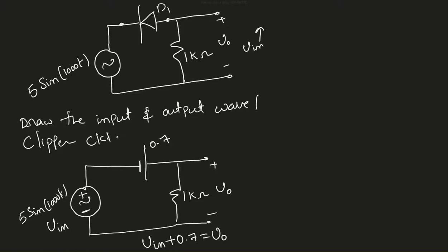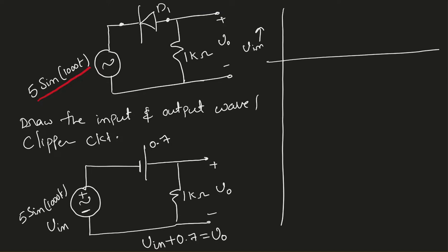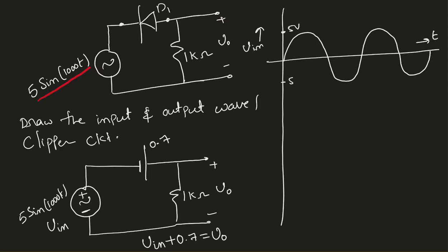Here is an example we're going to solve using the clipper circuit. The input voltage is 5 sine 1000t, varying from positive 5 volts to negative 5 volts, so the peak-to-peak value is 10 volts. Always remember to draw the input waveform and output waveform one under another. Here is my input voltage V_in varying from positive 5 volts to negative 5 volts.